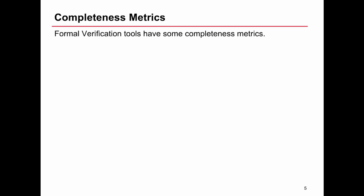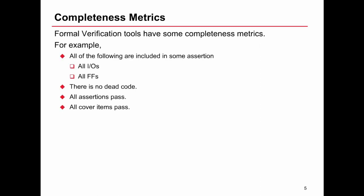Formal verification tools, however, do have some measure of this. What they can report is that all of the following are included in the cone of influence of some assertion: all IOs, all flip-flops. Formal can also check there's no dead code, meaning lines of code that can never execute. It can also check that all assertions always pass under all circumstances and there is always a way of demonstrating a cover passing.